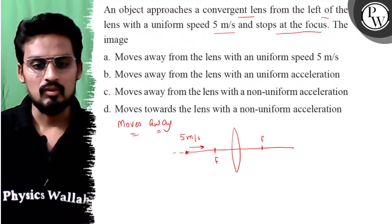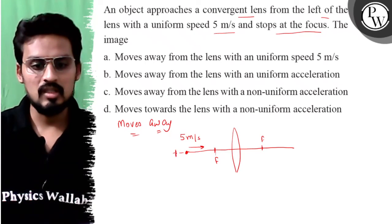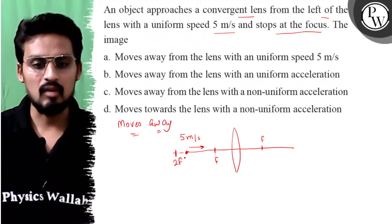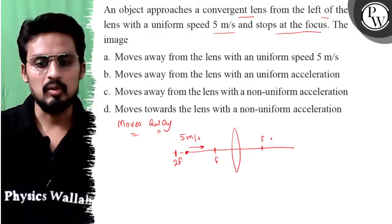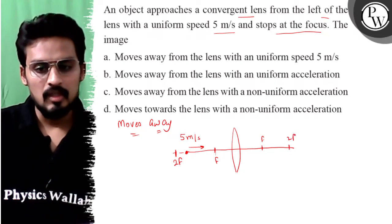Let's talk about 2F position. Suppose at some position the object was at 2F. When the object is at 2F, the image will also be at 2F.